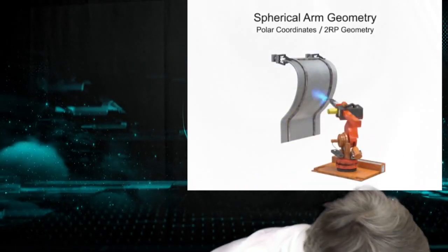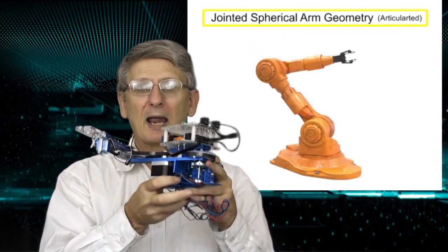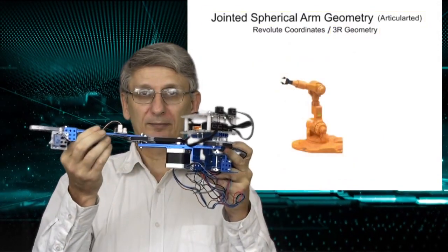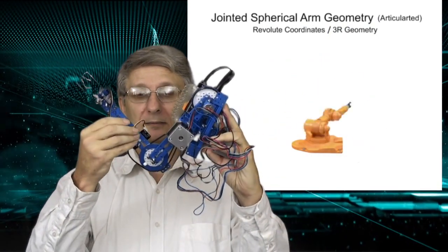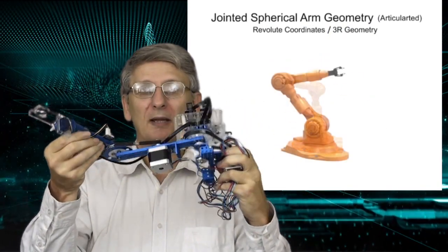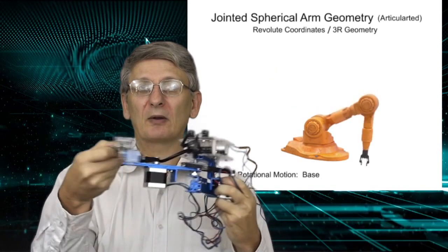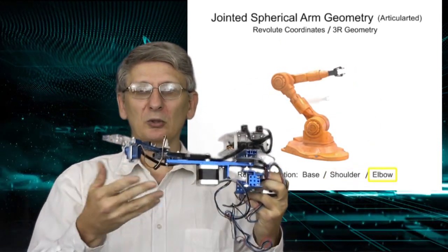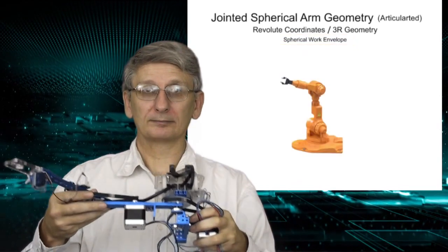This motor from MakerBlock has 4 degrees of freedom with 4 motors or actuators, allowing it to move in various locations. And this one is used as a plotter to draw on a whiteboard.